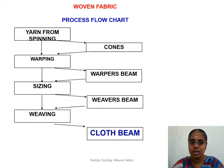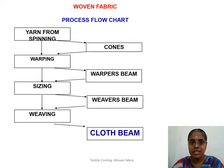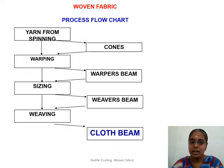These names have to be known clearly. The warper's beam number of ends will always be less than the weaver's beam number of ends. The weaver's beam number of ends divided by the number of beams fed into the sizing will give the number of ends in the warper's beam.